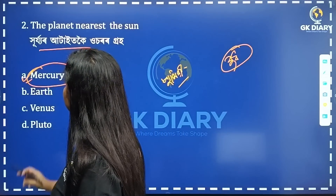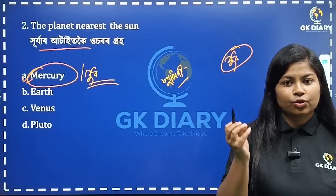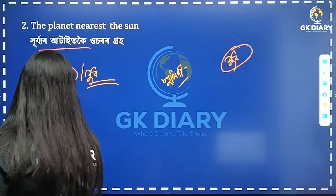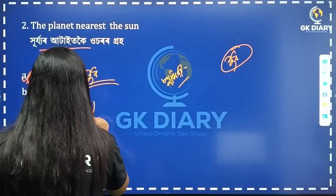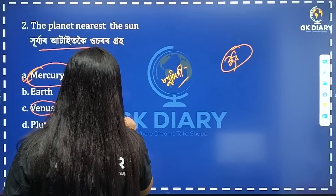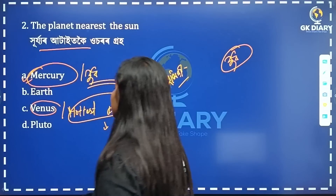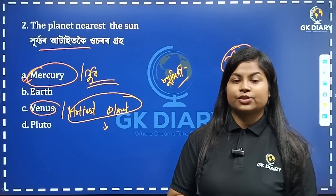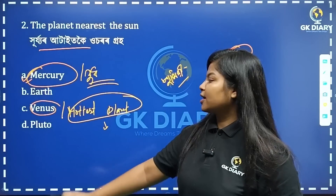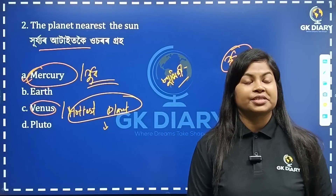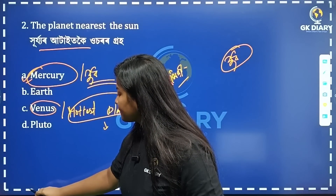The hottest planet — Venus is the hottest planet, not Mercury. Venus is so hot because of CO2. The greenhouse effect causes global warming, trapping heat, which is why Venus is the hottest planet. Option A is the correct answer.